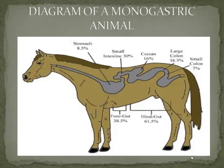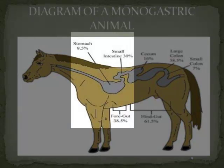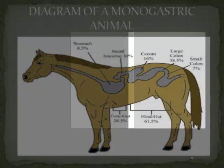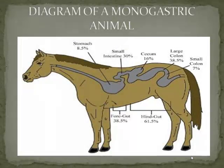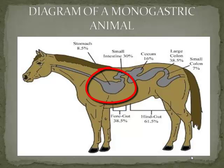Here we have a diagram of the monogastric animal. As you can see in this diagram, we have a horse. The digestive system is made up of two parts. The food enters through the mouth and travels down what we call the oesophagus, or the food pipe, into the one true stomach.